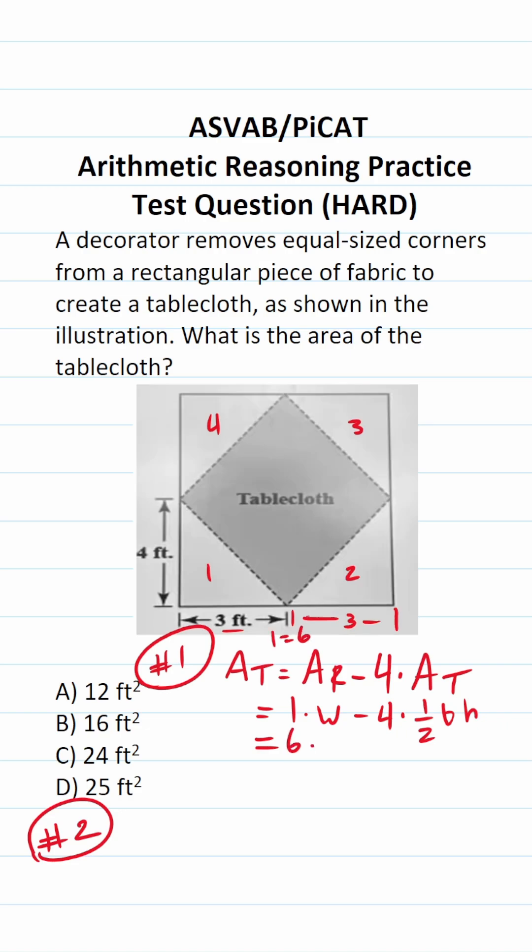So this becomes six times—what is its width? If that part's four, this part right here is also going to be four. So its width is going to be four plus four or eight. So this becomes six times eight minus four times one-half. What is the base of our triangle?